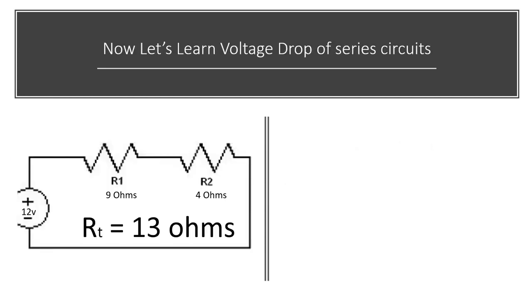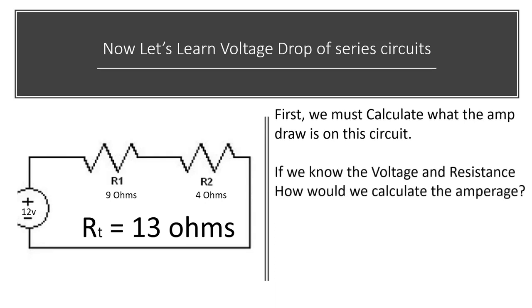Now let's learn about voltage drop of series circuits. First, we must calculate what the amp draw is on the circuit. If we know the voltage and the resistance, how could we calculate the amperage? We learned in week 2, part 1, about Ohm's Law.